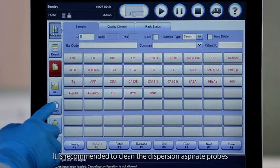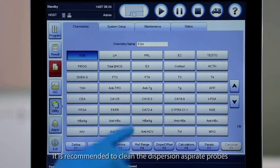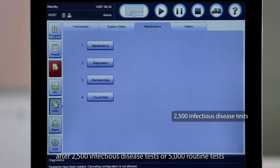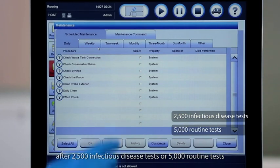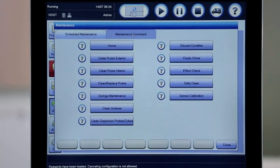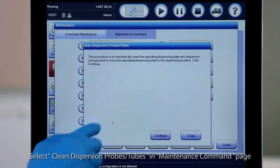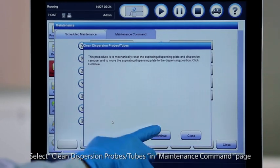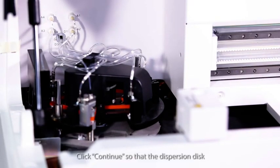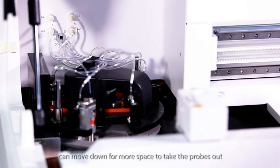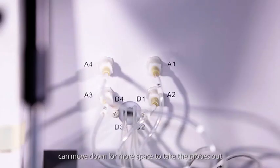It is recommended to clean the dispersion aspirate probes after 2500 infectious disease tests or 5000 routine tests. Select Clean Dispersion Probes in Maintenance command page. Click Continue so that the dispersion disk can move down for more space to take the probes out.